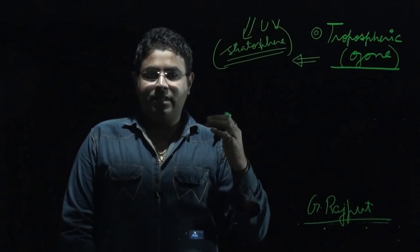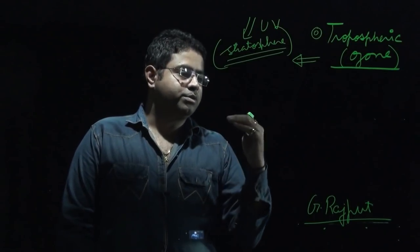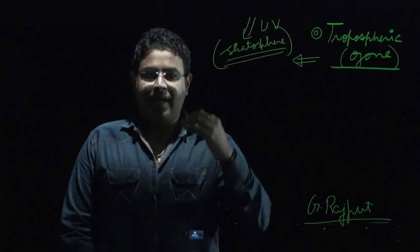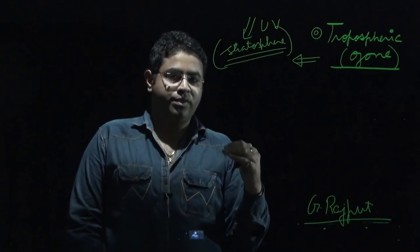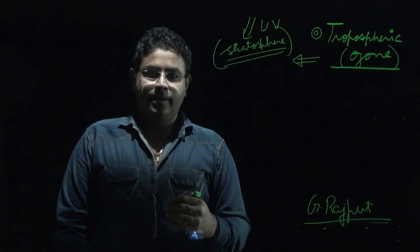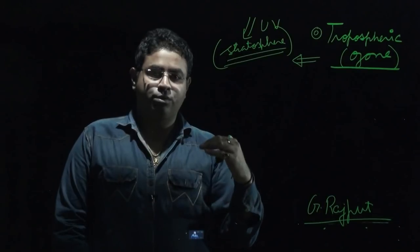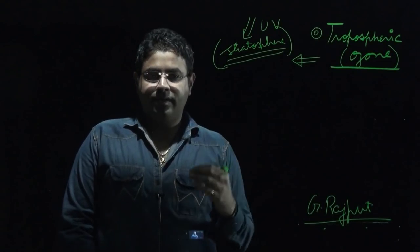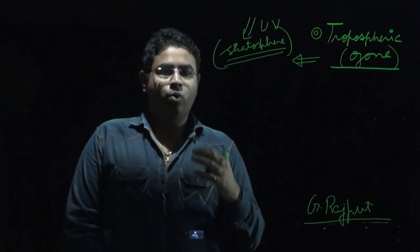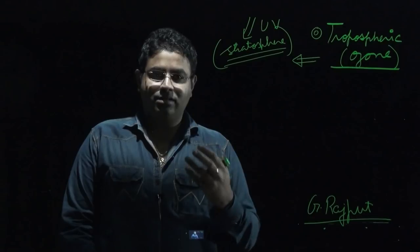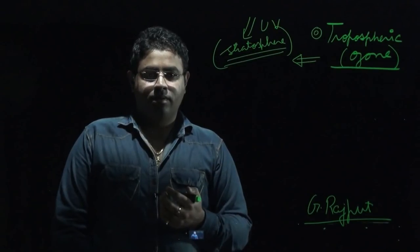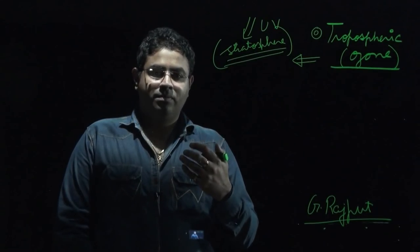When ozone is present at the tropospheric level, it becomes a concern. The troposphere is the lowest level of the atmosphere. The atmosphere has different layers: troposphere, stratosphere, mesosphere, ionosphere, and exosphere. The troposphere is the lowest layer, and it contains the gases that make life on earth possible.